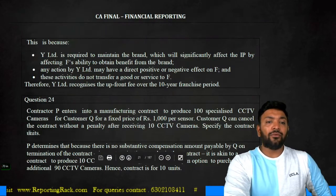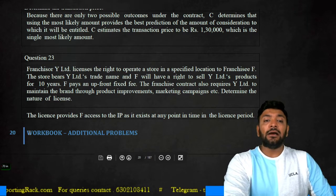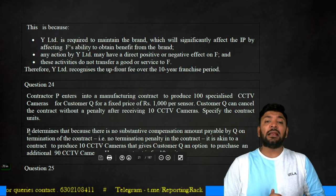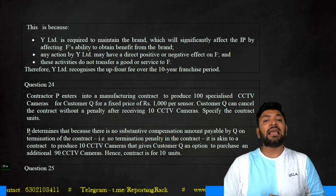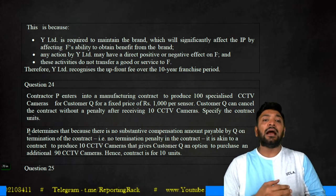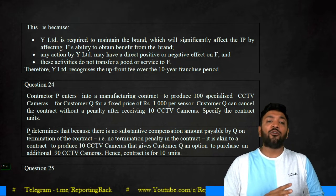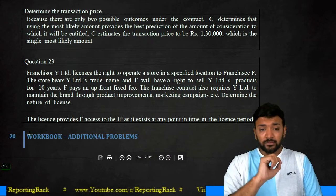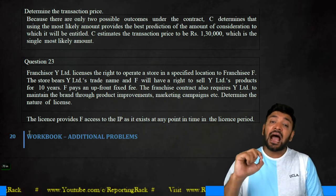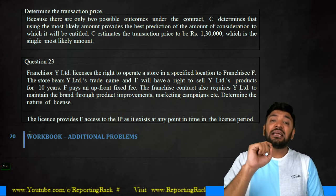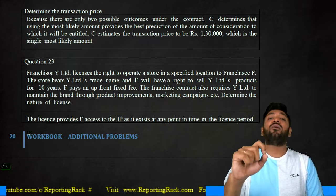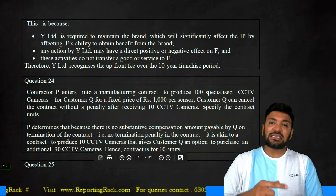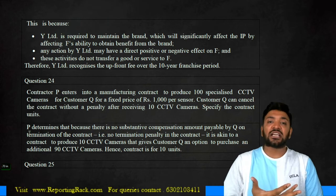The answer: F Limited accesses the intellectual property as it exists at any point of time during the license period. This is because Y is required to maintain the brand, which is significantly affected by Y's activities on the intellectual property. Any action by Y Limited has a direct positive or negative effect, and these activities do not transfer goods or services to F. Therefore, Y recognizes the upfront fee over the entire 10-year franchising period. The license provides F Limited access to the IP as it exists at any point during the license period — not just as it exists at the point of grant, similar to how Netflix viewers access content as it gets uploaded.